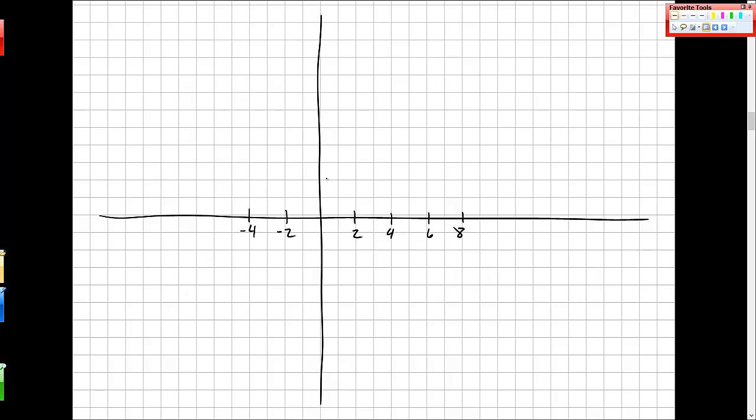Minus 2, minus 4. Minus 2, minus 4, minus 6. Like that. And then I'm going to plot these points. So I had negative 3, 0.